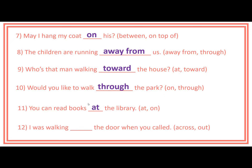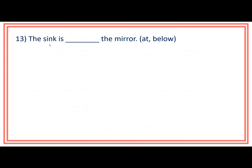Number 12: I was walking ___ the door when you called. Prepositions inside the bracket are across and out. Answer: I was walking out the door when you called. Number 13: The sink is ___ the mirror. Prepositions inside the bracket are at and below. Answer: The sink is below the mirror.